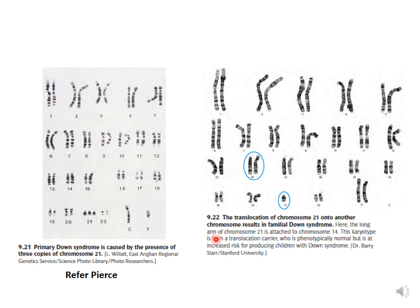Familial Down syndrome is caused by translocation, while primary Down syndrome is caused by three copies of the 21st chromosome. In familial Down syndrome, trisomy is happening on the 14th chromosome because of translocation of the 21st chromosome. Please refer to your peers textbook if you want more details on how this happens.